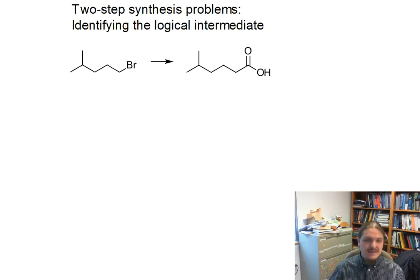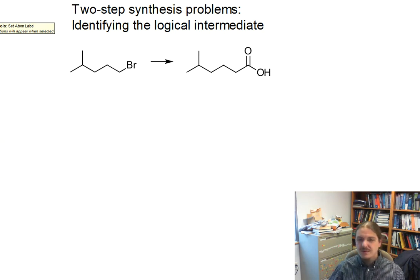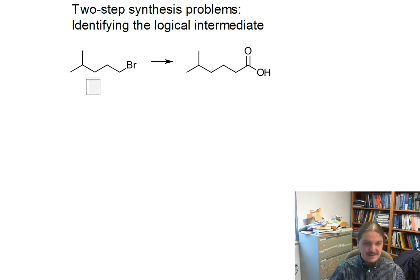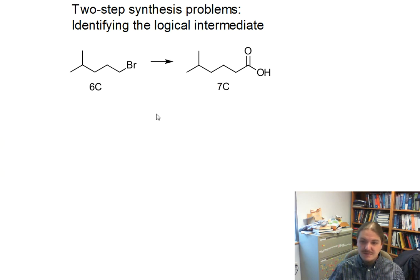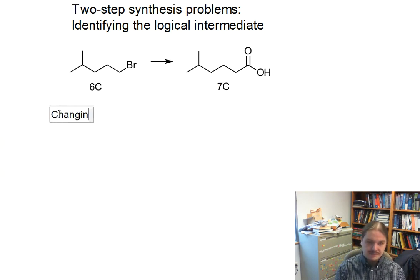I wanted to do one more example in determining a logical intermediate. Here is a case where I'm going to convert this alcohol halide into the carboxylic acid. It's worth noting that there are six carbon atoms in the starting compound and seven carbon atoms in the product. So we are looking at changing the carbon skeleton.